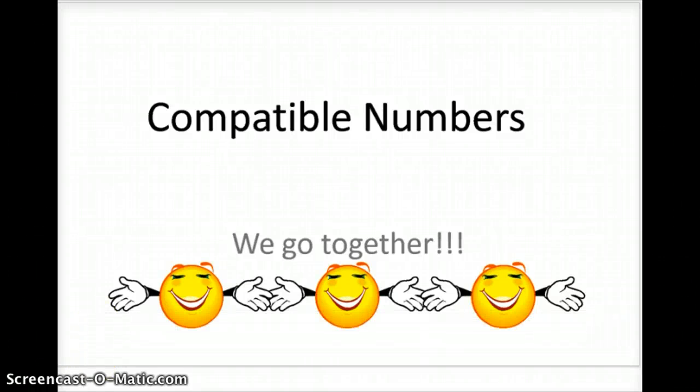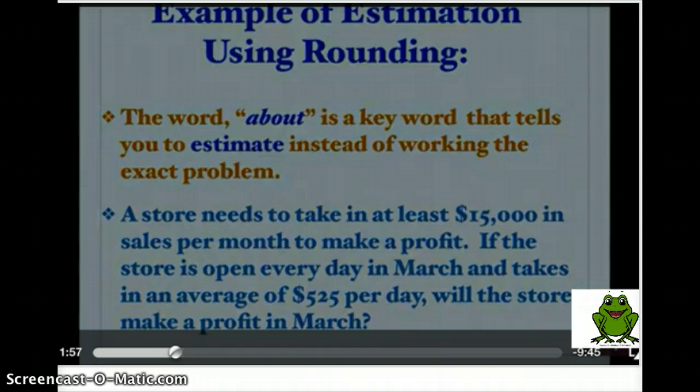Today we're going to be looking at compatible numbers, which is just another way of rounding, but it's where you're going to want to be as close as you possibly can get to that answer. The word 'about' is a keyword that tells you to estimate instead of working the exact problem. Keywords like estimate, about, reasonable, and rounding all mean to find a number that's close to but not the exact answer.